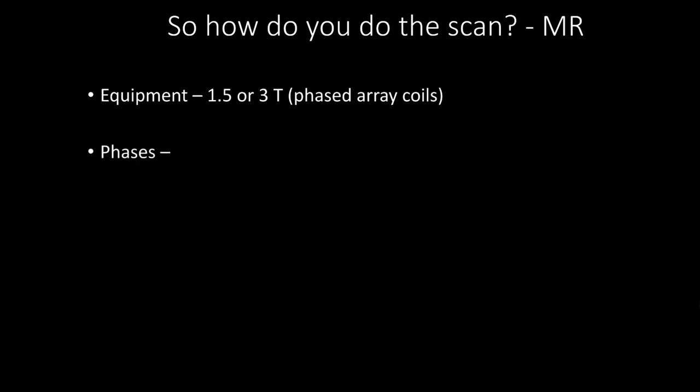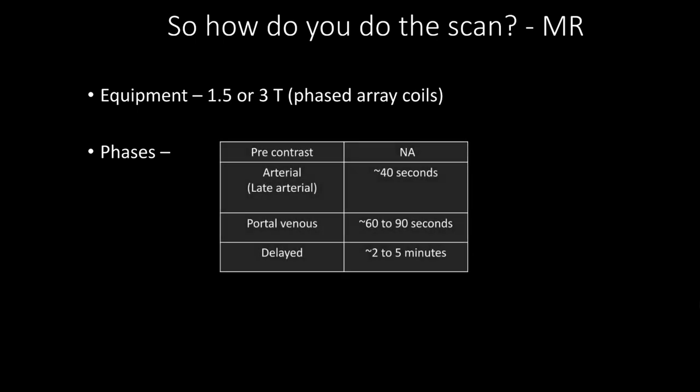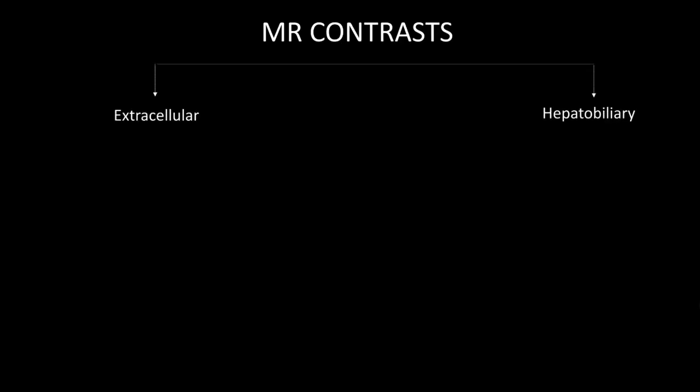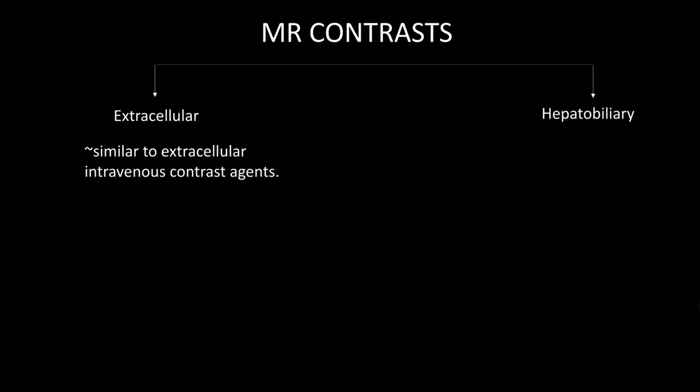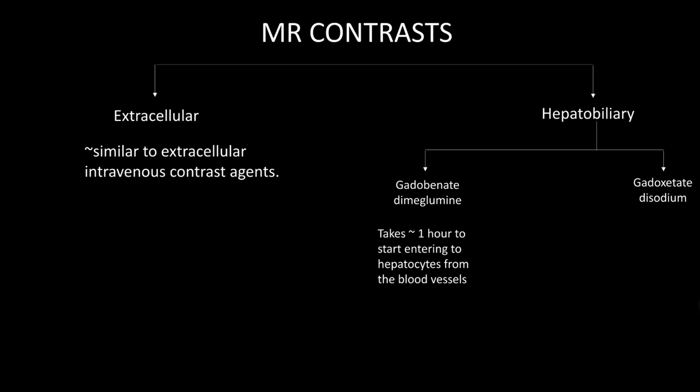For MR, at least a 1.5 or 3 Tesla scanner is required. The phases are similar to CT: pre-contrast, arterial, portal venous, and delayed, with similar timing. Contrast agents for MR are divided into extracellular contrast agents — which show similar kinetics to IV contrast used in CT — and hepatobiliary contrast agents, which are of two types: gadobenate dimeglumine and gadoxetate sodium. The key difference is uptake and excretion timing: gadobenate is relatively slower, taking about one hour to enter hepatocytes, while gadoxetate is faster, with uptake beginning around 20 minutes.